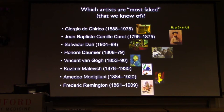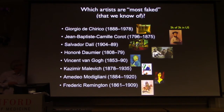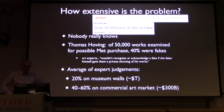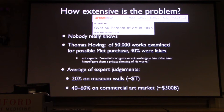So which artists are the most faked? Giorgio de Chirico, Camille Corot — Corot's an interesting case. Scholars believe he painted about 3,000 paintings in his lifetime; there are 5,000 of them in the United States. Salvador Dalí, Van Gogh has often been copied and faked, Amedeo Modigliani, and so forth. The only American is Frederick Remington. How expensive is the problem? Over 50% of art is fake, says Art News. The answer is really nobody knows.